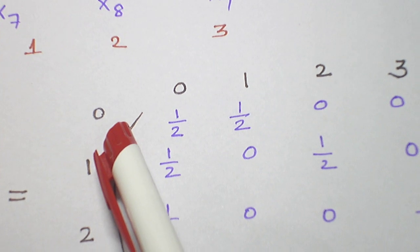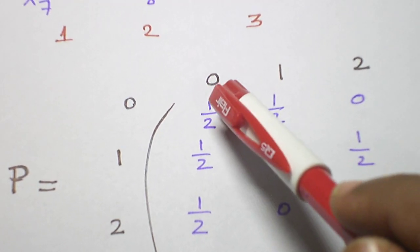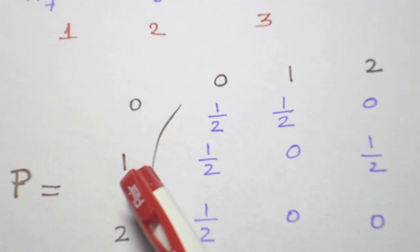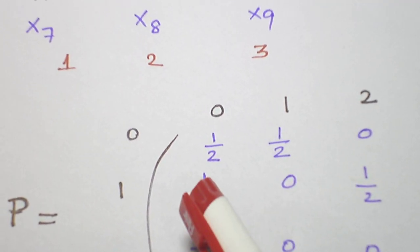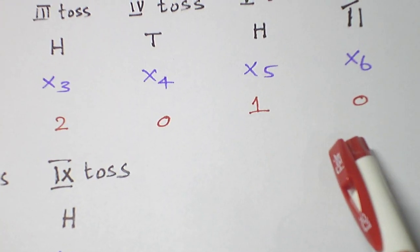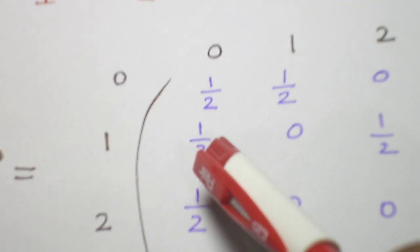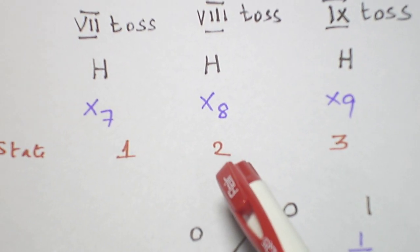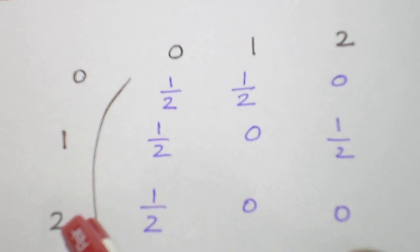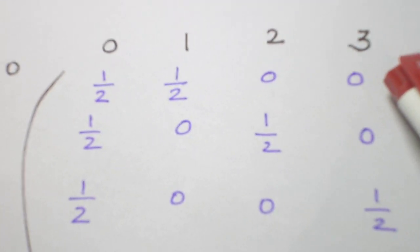If it is in state zero and we get a head, it moves to one. If we get a tail, it remains in state zero. The probability of getting a tail is one-half. From state one, it may move to state two or back to state zero. If we get a tail, it moves to zero with probability one-half. If we get a head, it moves to state two with probability one-half.